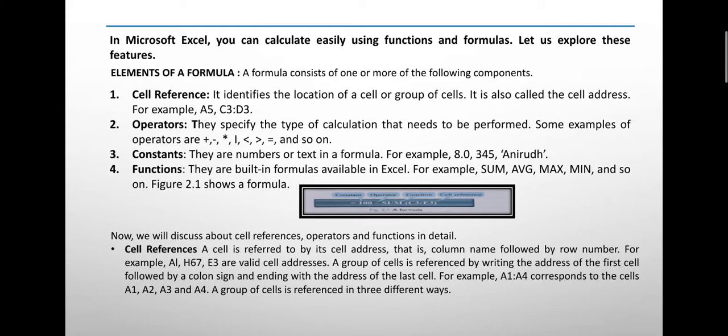Cell reference identifies the location of a cell or group of cells. It's also called the cell address. When we want to do any calculation, we need to identify the cell. For example, A5 means the column is A and the row is 5. C3, D3, these are cell addresses of Microsoft Excel.